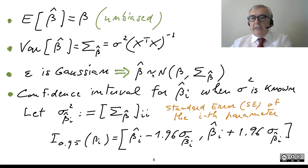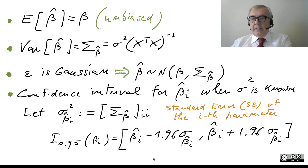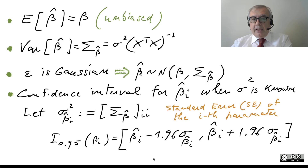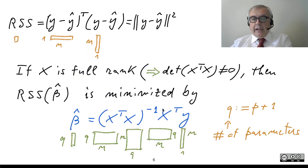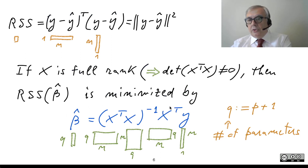So we can say that beta-hat is normally distributed — it is a vector normally distributed with expectation beta, the vector of true parameters, and variance matrix sigma-beta-hat. The fact that beta-hat is Gaussian comes from its expression: you have something that can be computed using matrices, but these matrices depend only on X, which is deterministic.